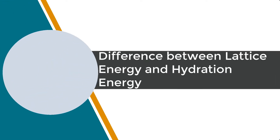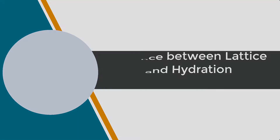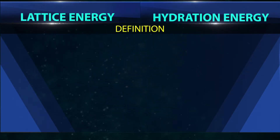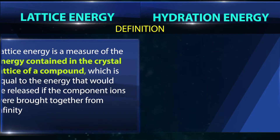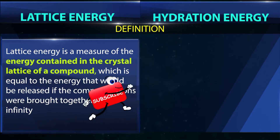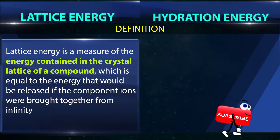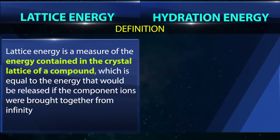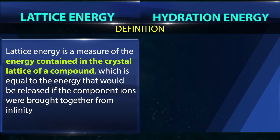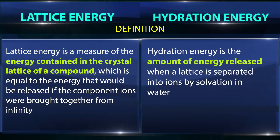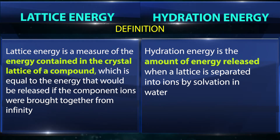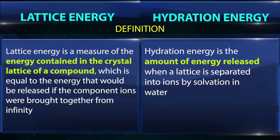Difference between lattice energy and hydration energy. Definition — lattice energy: the lattice energy of a crystalline solid is usually defined as the energy of formation of a crystal from infinitely separated ions, and as such is invariably negative. Definition — hydration energy: hydration energy is the amount of energy released when a lattice is separated into ions by solvation in water.